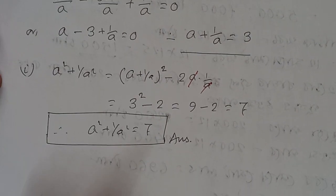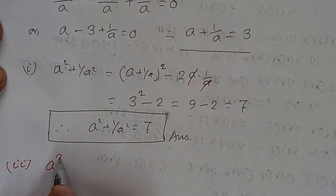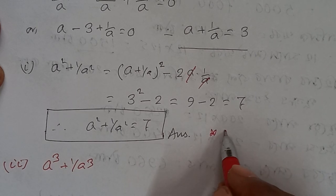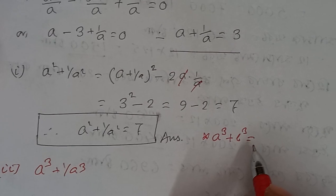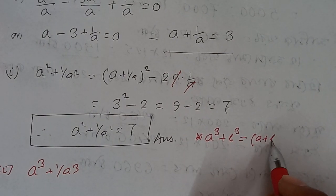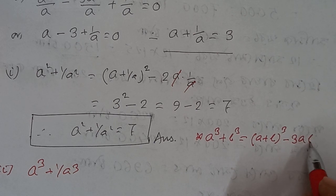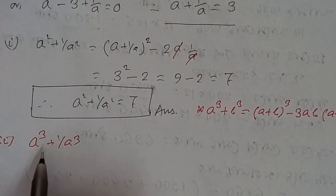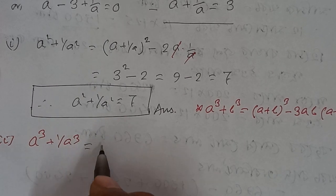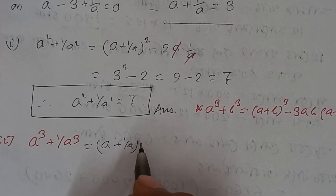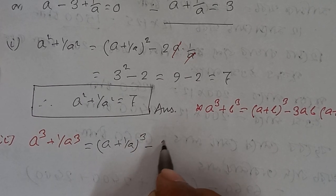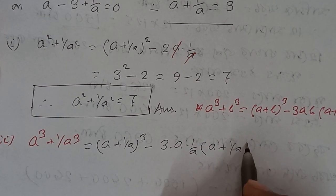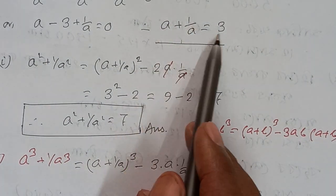For the second part, we find a cube plus 1 by a cube. We know that a cube plus b cube equals a plus b whole cube minus 3ab into a plus b. So, a cube plus 1 by a cube equals a plus 1 by a whole cube minus 3 times a times 1 by a into a plus 1 by a. We know that a plus 1 by a equals 3.